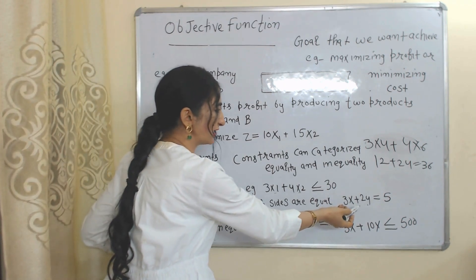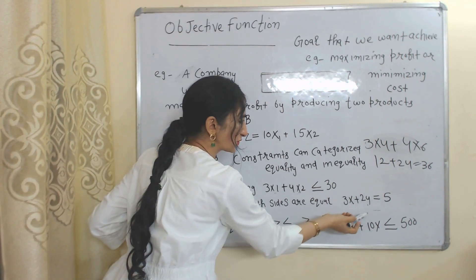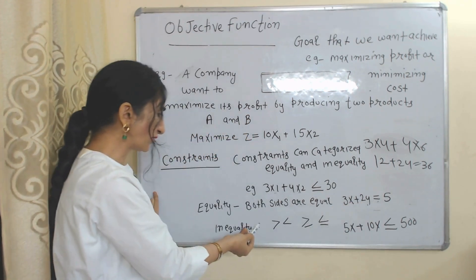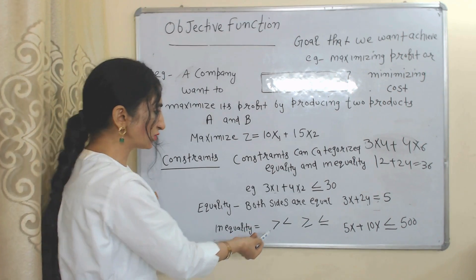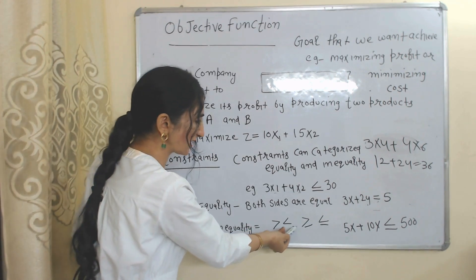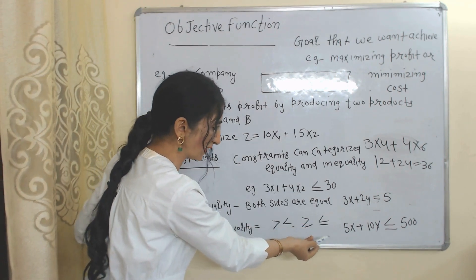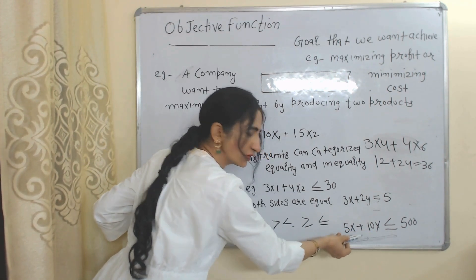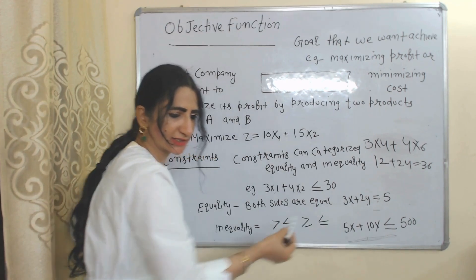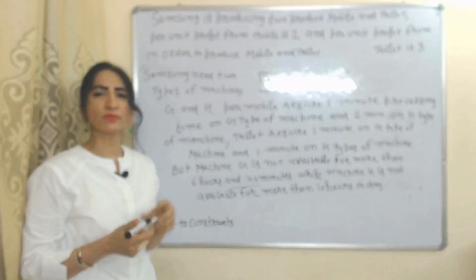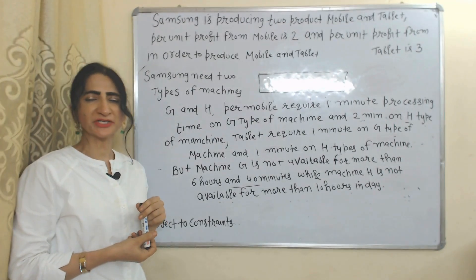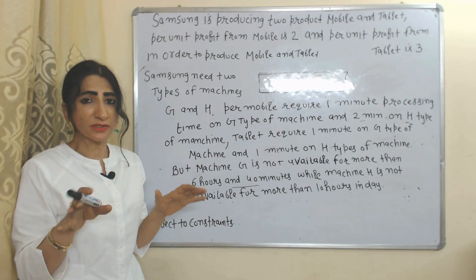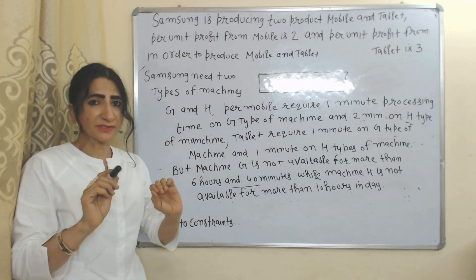Constraints mainly have two forms: equality and inequality. In case of equality you will find constraints with an equal sign. In case of inequalities you will find symbols like less than or equal to, or greater than or equal to. These forms of constraints show inequality.